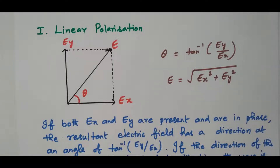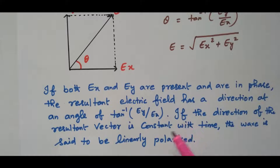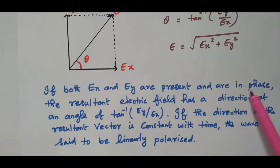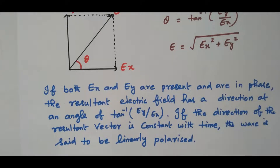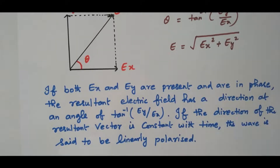So that it linearly varies — the waveform varies linearly. If both Ex and Ey are present and in phase, then the resultant electric field has a direction of angle tan inverse Ey by Ex. If the direction of the resultant vector is constant with time, the wave is said to be linearly polarized.